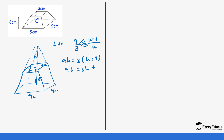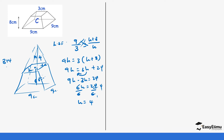Expanding: 9h equals 3h plus 24. Collecting like terms: 9h minus 3h equals 24, so 6h equals 24. Dividing both sides by 6 gives h equals 4. So the smaller pyramid height is 4 centimeters, and the bigger pyramid height is 8 plus 4, which is 12 centimeters. Now we have everything we need.